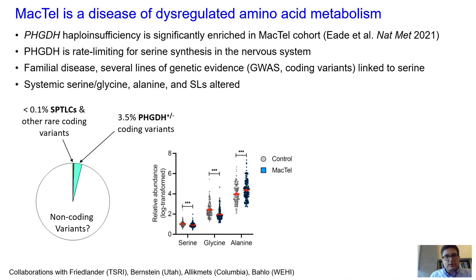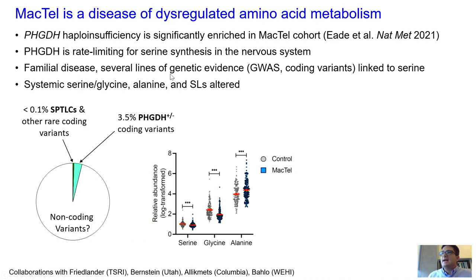MacTel is emerging as a disease of dysregulated amino acid metabolism, in particular serine and glycine. More recently, collaborating with Rando Apilic-Mets's lab and Marty Friedlander, we did a deeper dive into MacTel genetics and identified PHGDH haploinsufficiency. PHGDH is the rate-limiting step for serine synthesis, particularly in the nervous system. We now see several converging lines of evidence — GWAS hits and specific coding variants — all linking serine to MacTel.